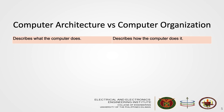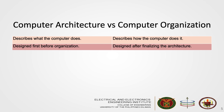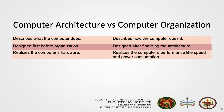If you still can't understand our definitions, this table is a summary of the differences between computer architecture and computer organization. Computer architecture describes what the computer does, while organization describes how the computer does it. In design order, a computer's architecture is designed first, while organization is designed after finalizing the architecture. A computer's architecture realizes its hardware, while a computer's organization realizes its performance, like speed and power consumption.